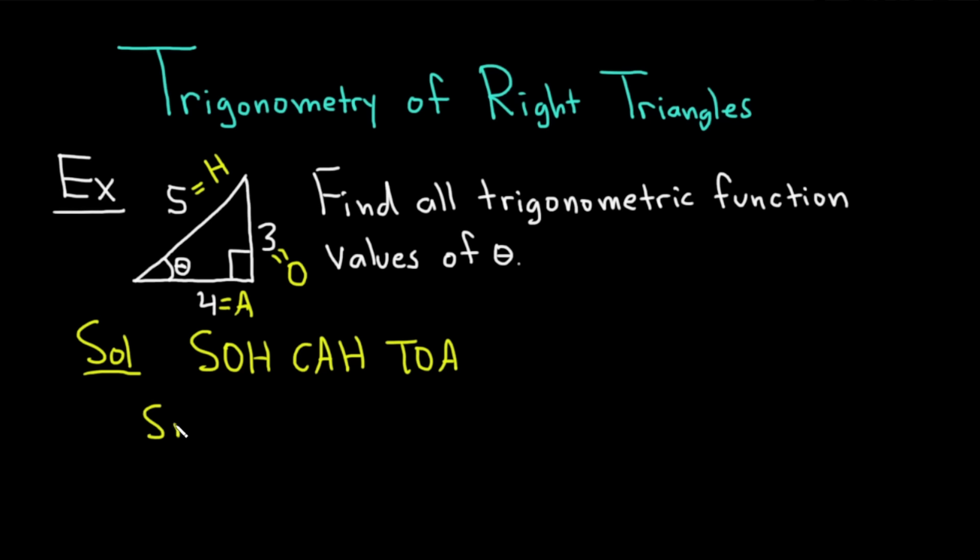The sine of theta is opposite over hypotenuse, so it'll be 3 over 5. That's one answer. And then for the cosecant of theta, which is the reciprocal, you can just flip your answer. So that's 5 over 3. That's another answer.